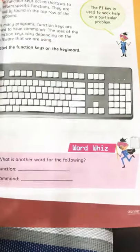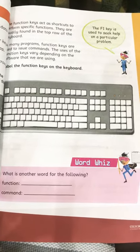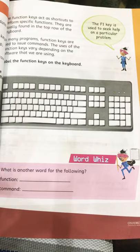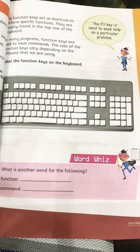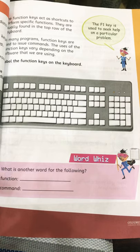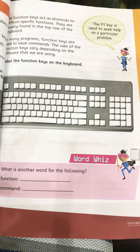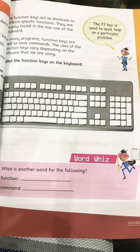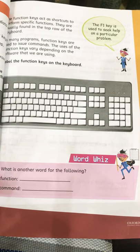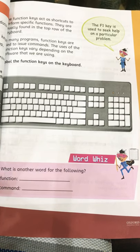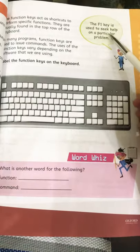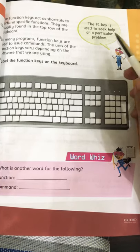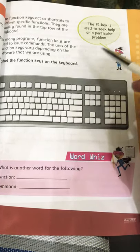Let's move to page number 39. The function keys act as a shortcut to perform specific functions. They are usually found in the top row of the keyboard — from F1 to F12, located in the upper row. In many programs, function keys are used to issue commands. The uses of function keys vary depending on the software being used. For example, the F1 key is used to seek help on a particular problem — if you have any problem in the computer and need help, you press F1. Now label the function keys on the keyboard.